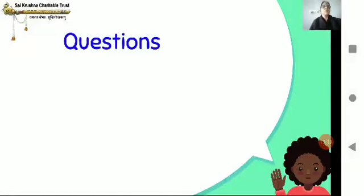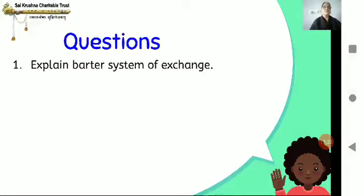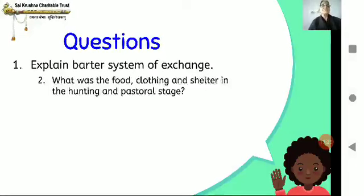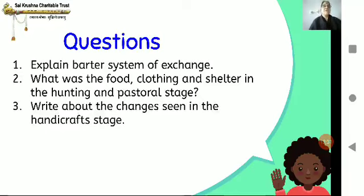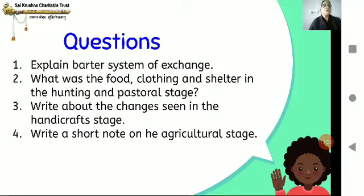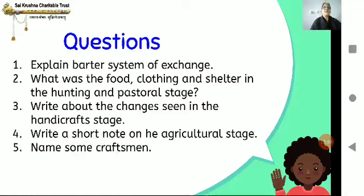Now we move on to some questions. Explain the barter system of exchange. What was the food, clothing and shelter in the hunting and pastoral stage? Write about the changes seen in the handicraft stage. Write a short note on the agricultural stage. Name some craftsmen. I am sure you have understood, children. Thank you.